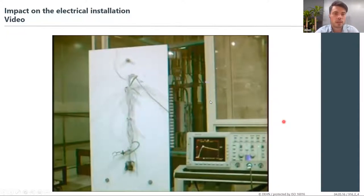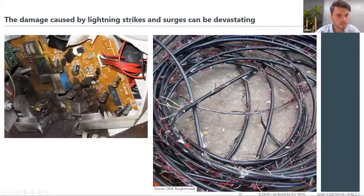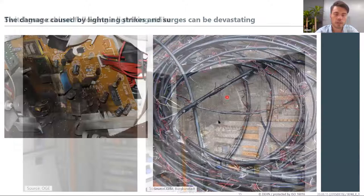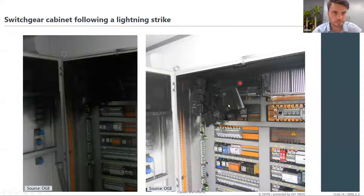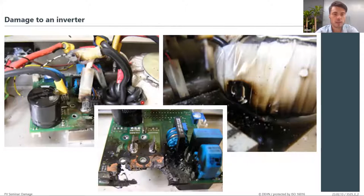This image shows some damages caused by lightning currents. A circuit board has been completely fried. A cable was struck directly and needs replacement. We've also seen damages in switchgear cabinets without surge protection — the lightning caused arcing which set the cabinet on fire. In PV systems especially, the inverter consists of very sensitive electronic devices subjected to transients over the course of operation. That's why it's important to protect inverters with surge protection devices.